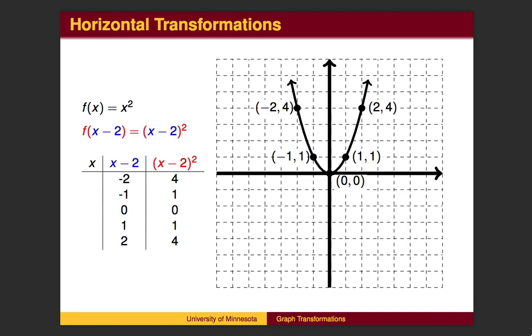Transformations in the x direction have an unusual twist. Let's examine what happens when we subtract 2 inside the parentheses before we square. Once we have the value for x minus 2, the middle column numbers will be squared to get the y values. The blue inputs of negative 2, negative 1, 0, 1, and 2 still produce the same squared values. The transformation, however, happens before we square. That is, the transformation happens to the input, the x value.